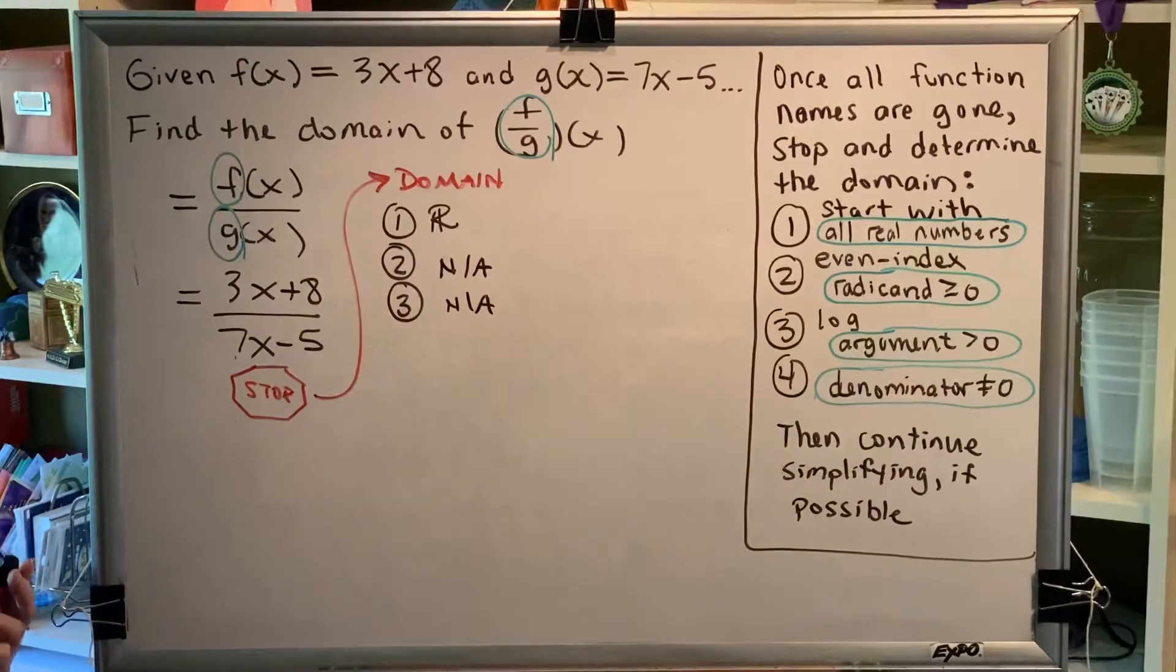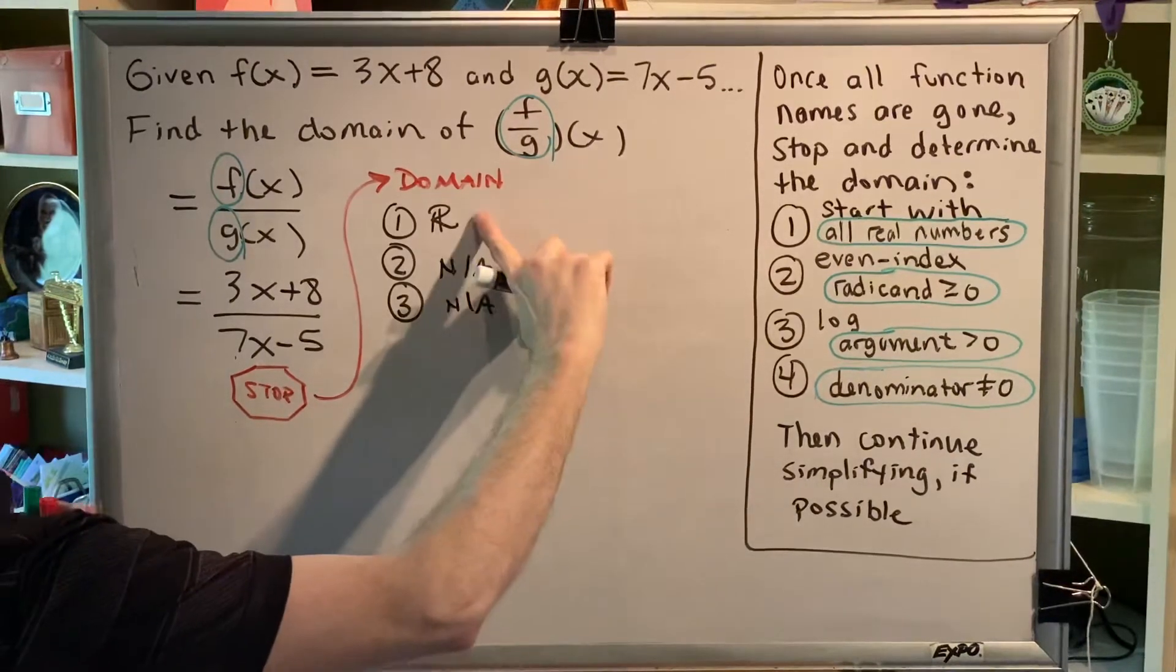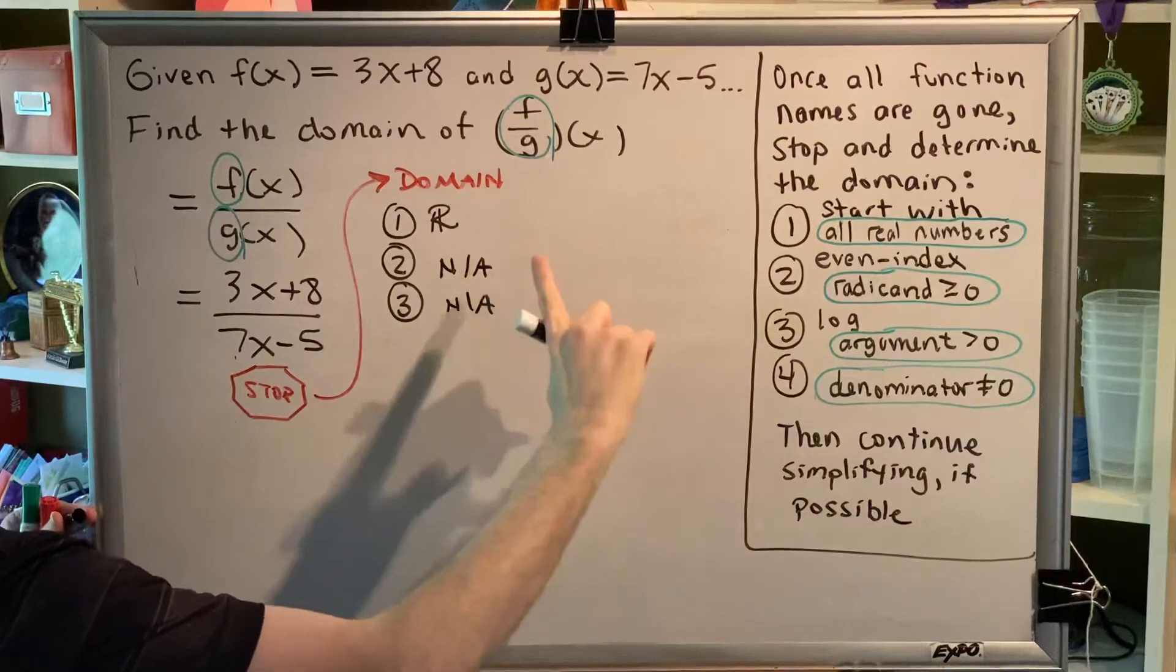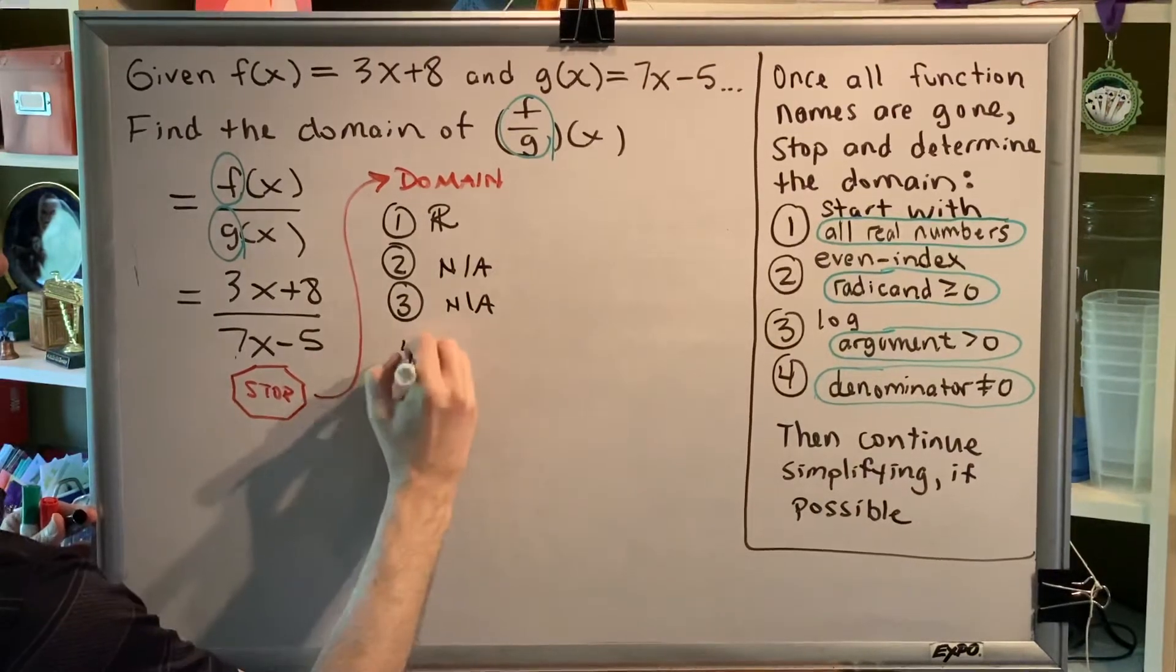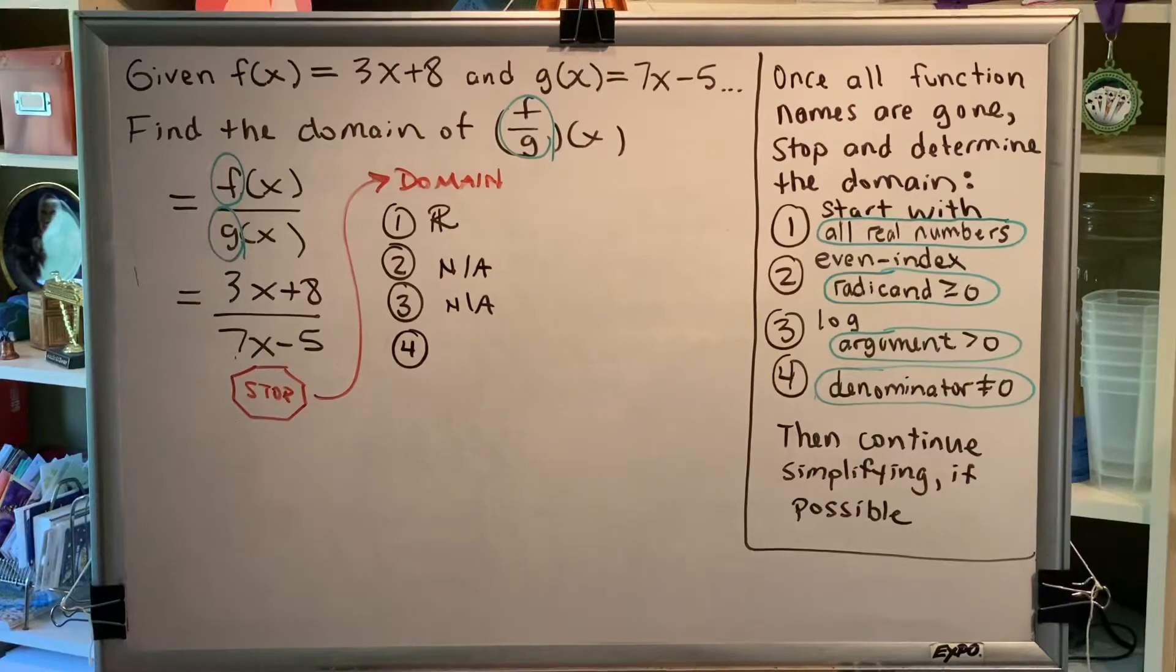So, so far our domain is all real numbers because we started with all real numbers and we didn't remove any in step two and we didn't remove any in step three. Step four, denominator not equal to zero.